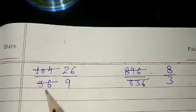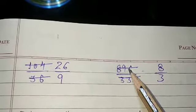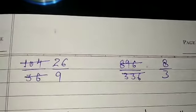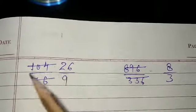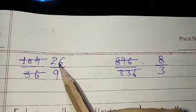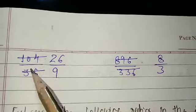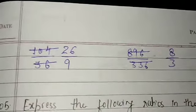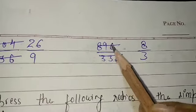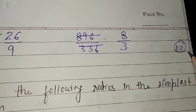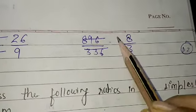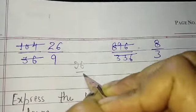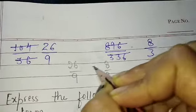Second question is 104 over thirty six and eight nine six over three three six. Either these two ratios are same or not. So how we can know? First we can divide this one. Four nine is thirty six, four two is eight and four six is twenty four. If you don't know this, then do it with 2 and then do it with further. I have done it with 112. So 112 is 8 and 112 is 3. So the ratio is 26 over 9 and 8 over 3, which is not equal to both.